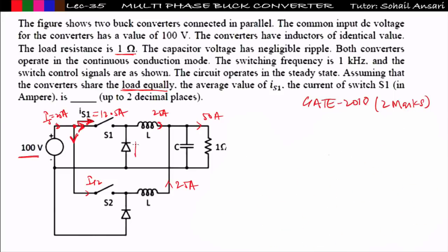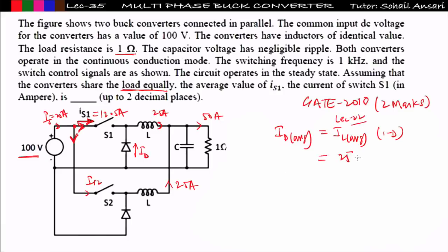Suppose the question asks for the diode current. We know: average diode current = iL_avg × (1 − D), from lecture 22. So average diode current = 25 × (1 − 0.5) = 12.5 A. Here, duty cycle is 0.5, which is why the switch current and diode current are equal.